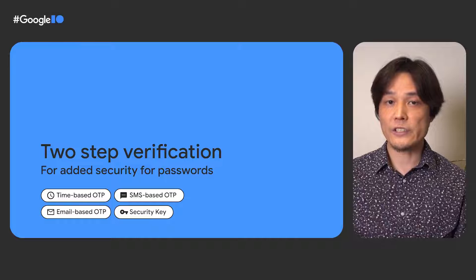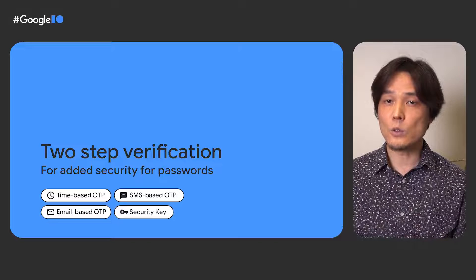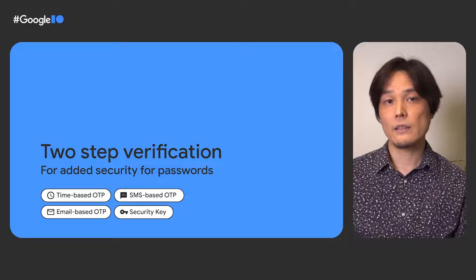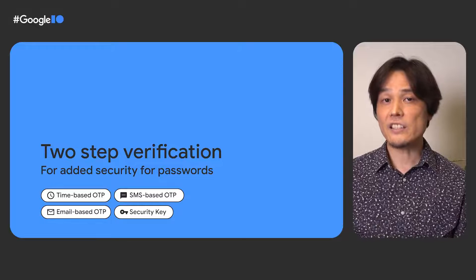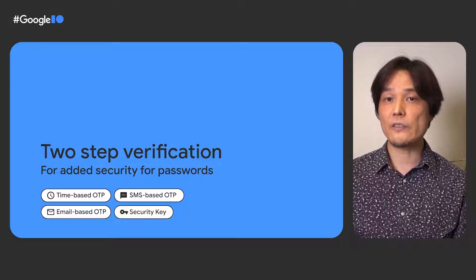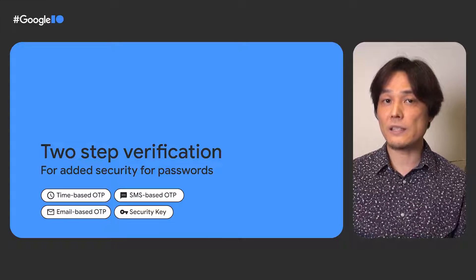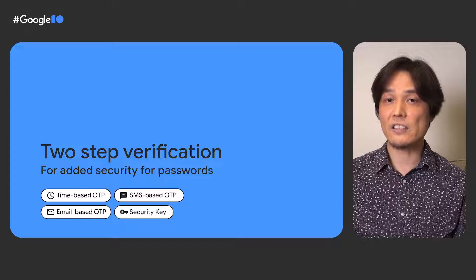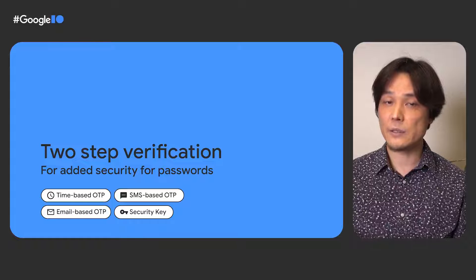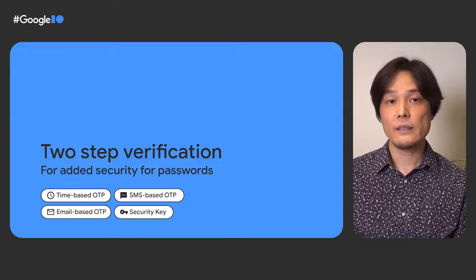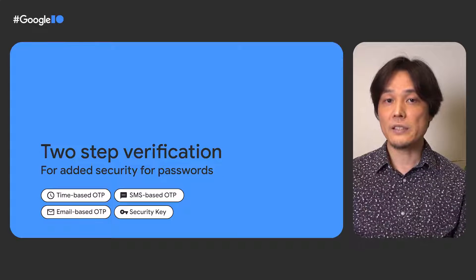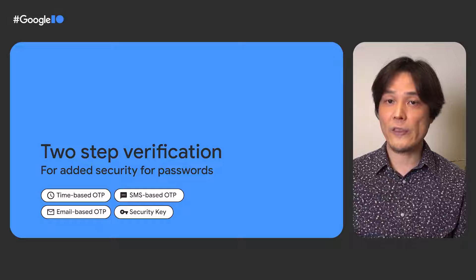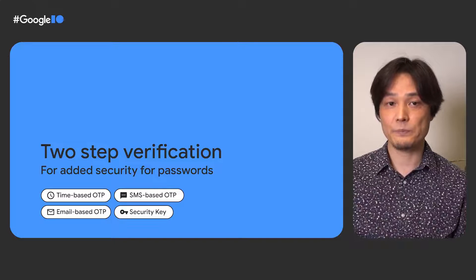Many service owners, including Google, have already mandated a second step. The idea is to ask the user to enter a one-time password — OTP in short — that can be generated directly via an app or may be delivered via SMS or an email. Sometimes, this step uses a FIDO authenticator, such as a security key.